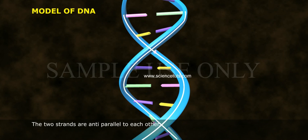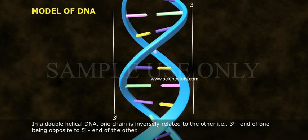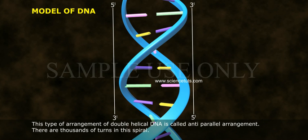The two strands are anti-parallel to each other. In a double helical DNA, one chain is inversely related to the other — that is, the 3' end of one is opposite to the 5' end of the other. This type of arrangement is called anti-parallel arrangement.